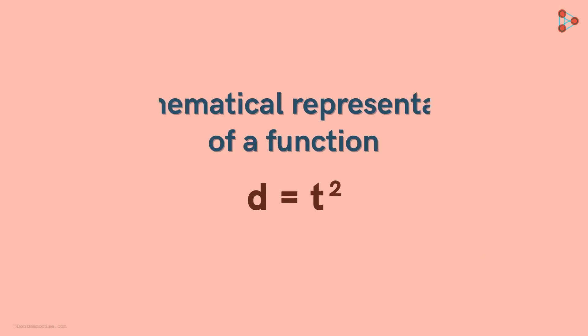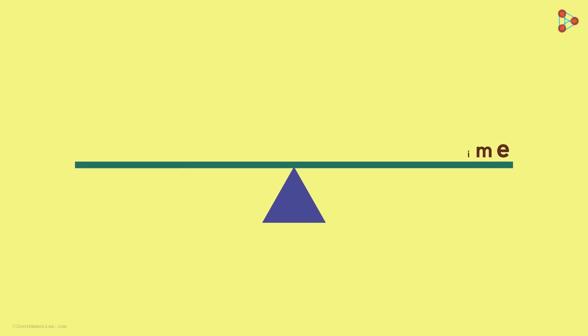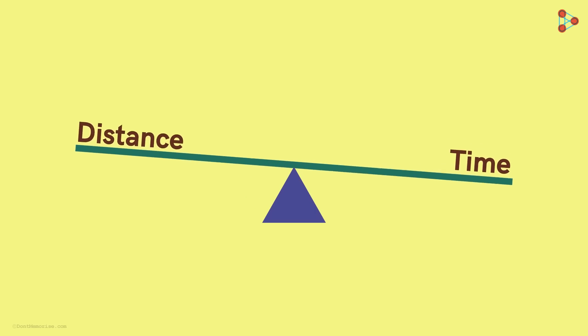This is a mathematical representation of a function. We know that when an object is in motion, it means its position changes with respect to time. So we have two variables, time and distance and they are related to each other.